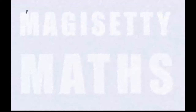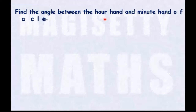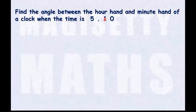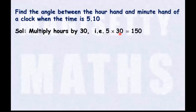Now take another example. Find the angle between the hour hand and minute hand of a clock when the time is 5 hours 10 minutes. The first step is to multiply the hours by 30. Here we have 5 hours; multiplying by 30, we get 150.